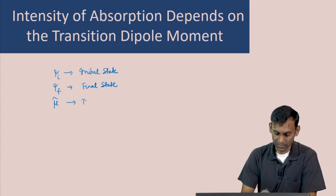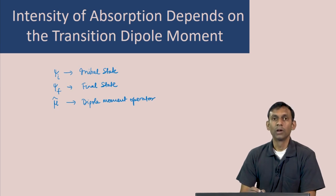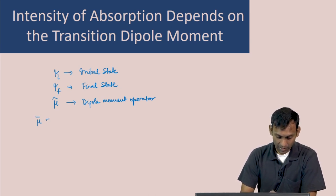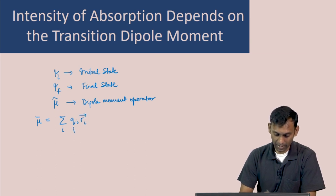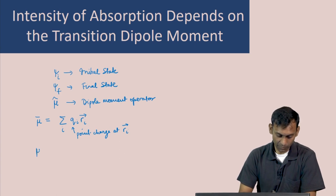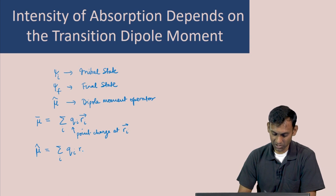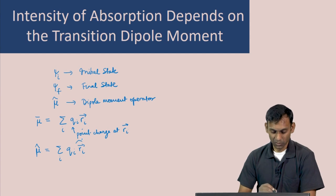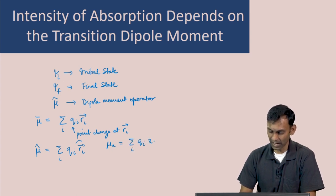Let us look at what this dipole moment operator is. To define the dipole moment operator, we start with the dipole moment property, which is the vector quantity μ = Σ_i q_i r_i, where q_i is the point charge at position r_i. Using this property, we can define the dipole moment operator μ̂ as the corresponding position vector replaced by the position operator. This dipole moment operator has three components; the x-component would be Σ q_i x_i, and similarly you can write expressions for the y and z components.